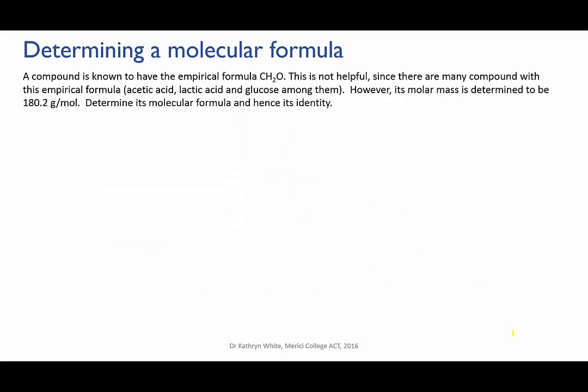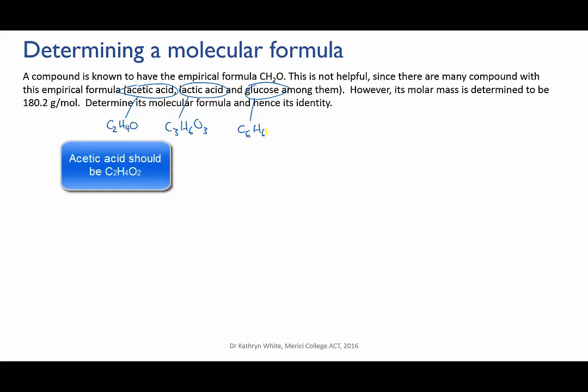Let's try an example. A compound is known to have the empirical formula CH2O. This is not helpful since there are many compounds with this empirical formula - acetic acid, lactic acid and glucose are among them. However, its molar mass is determined to be 180.2 grams per mole. Determine its molecular formula and hence its identity.